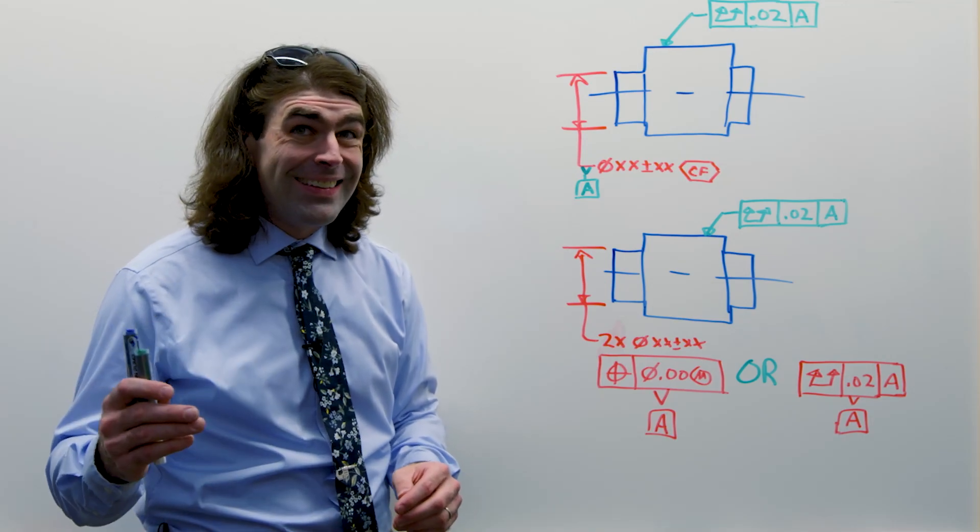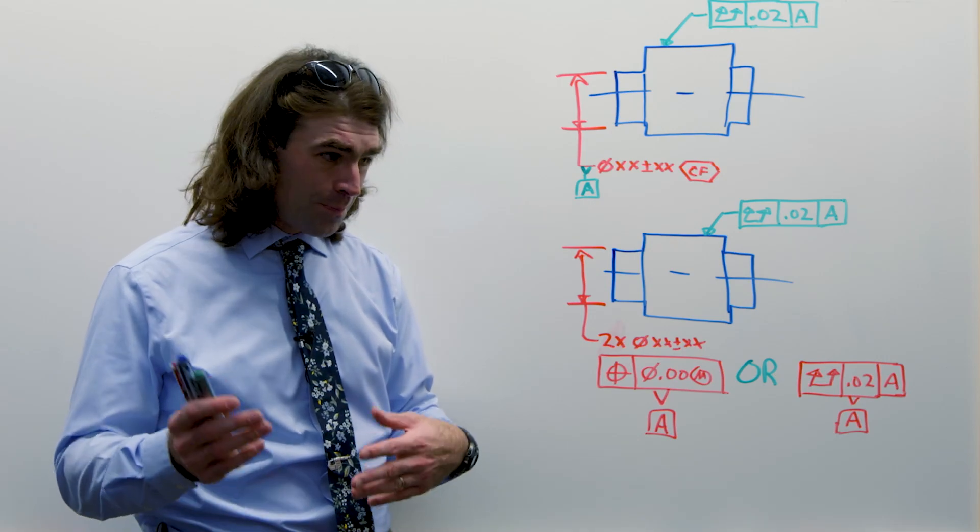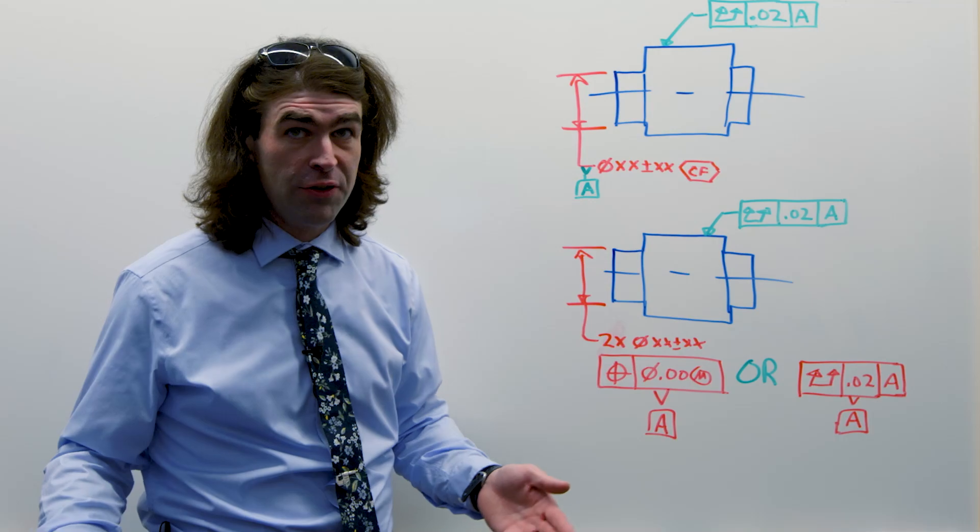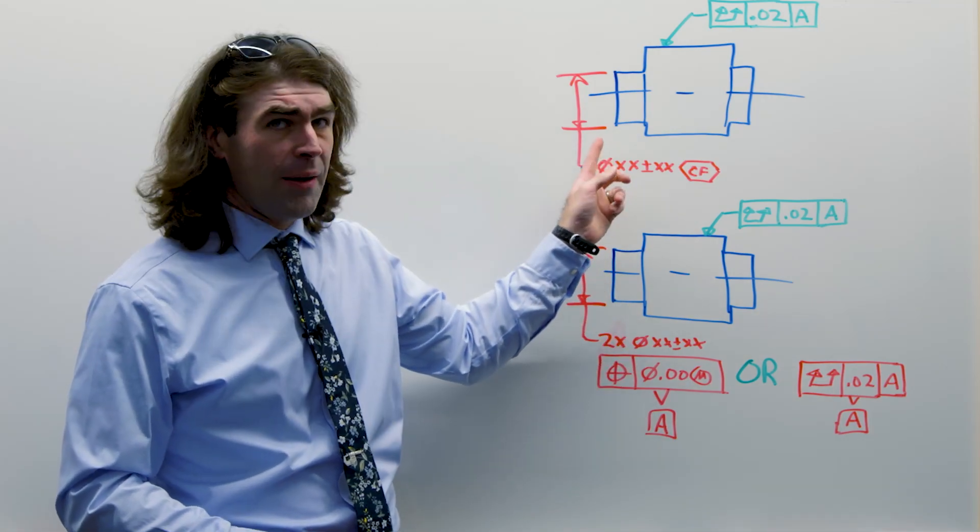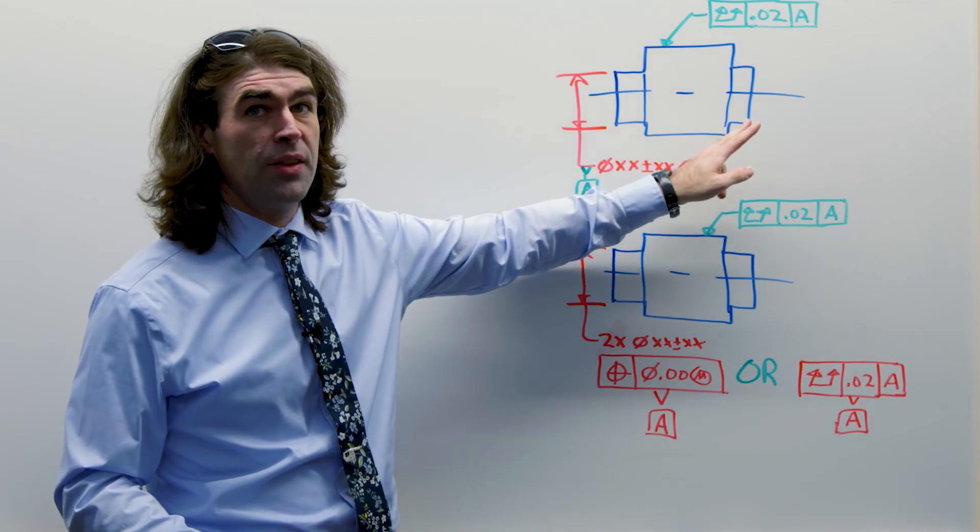Now, I'll disagree. Some of you might be typing in the comments now. I'll disagree with the use of continuous feature on discontinuous features. So I probably wouldn't put this on a drawing because this diameter is not continuous with this.